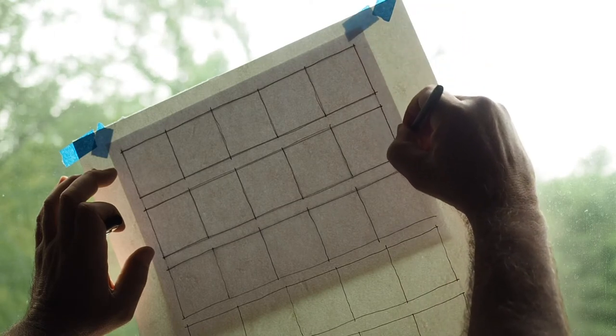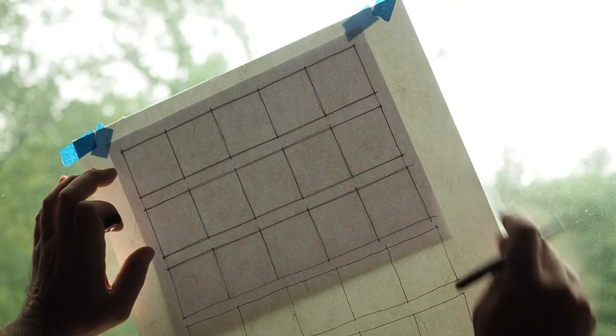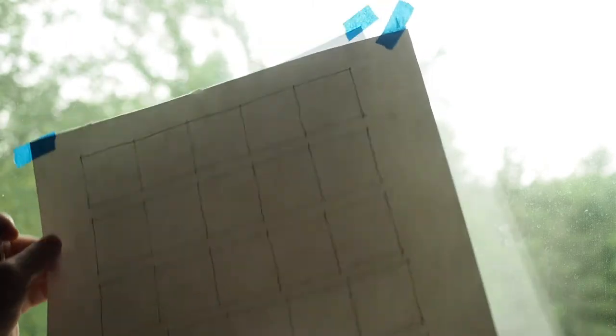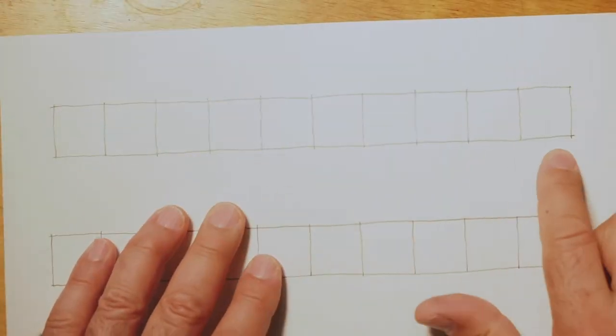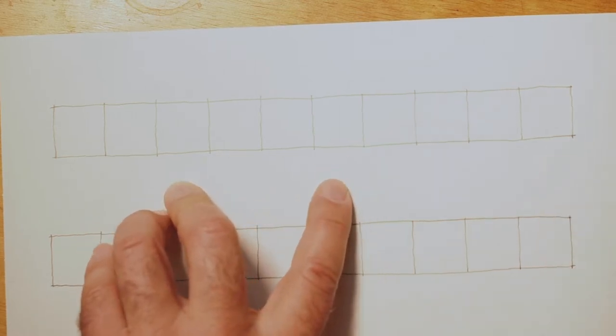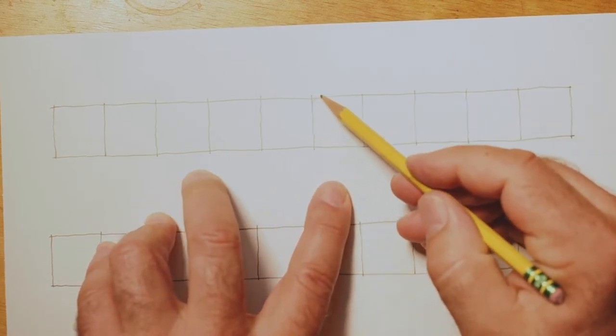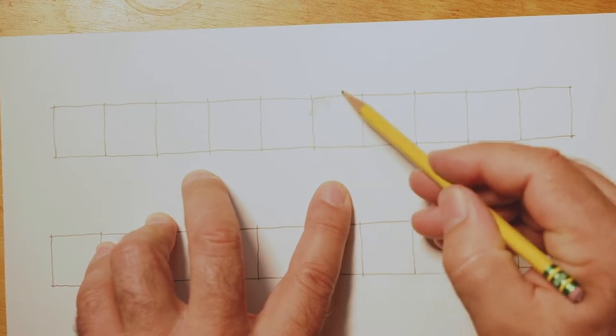Now I'm set up for doing the project. I'll begin with making a value scale with one end white and one end as dark as I can make it with this drawing tool.